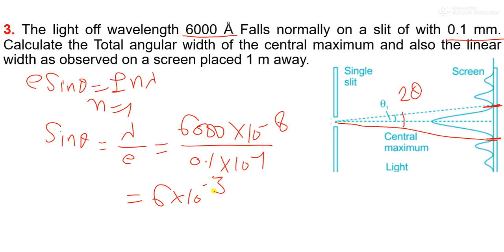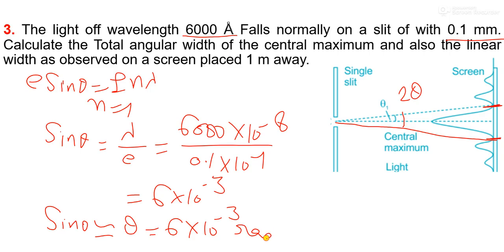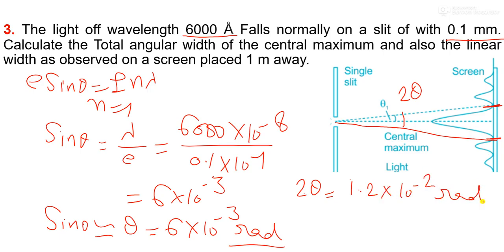Since this is very small, for small theta, sin theta is approximately equal to theta. So the value of theta is 6 into 10 to the power minus 3 radian. Therefore the total angular width 2 theta equals 12 into 10 to the power minus 3, which is 1.2 into 10 to the power minus 2 radian.